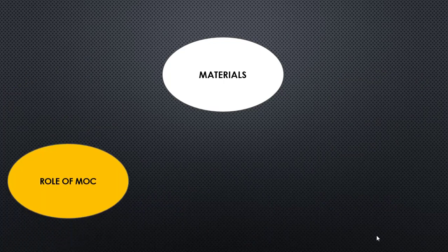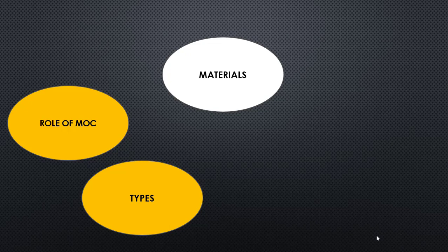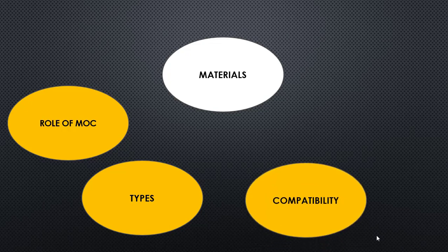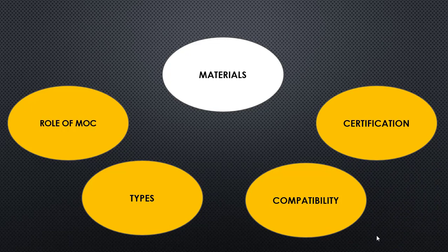The next topic is materials. The first thing you must know is the role of MOC — material of construction — which plays a vital role in the life of a piping system. You must know the different types of materials used: different materials are used for high temperatures and for low temperatures. Compatibility of material with respect to different fluid services is also important, as there are services with high and low corrosive nature. Finally, different materials need different types of certification, which is an approval for a material so it can be used in any piping system.